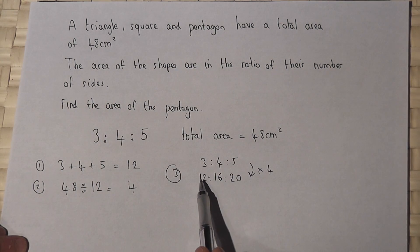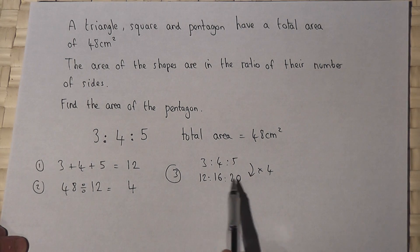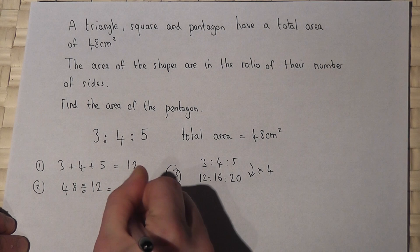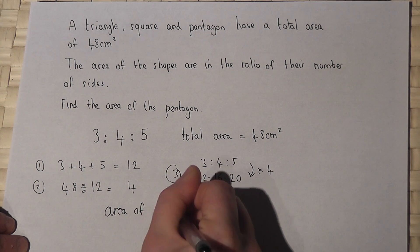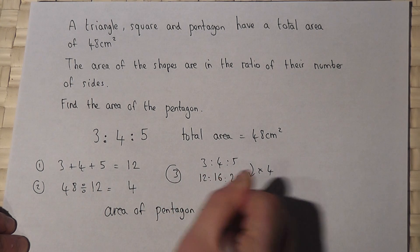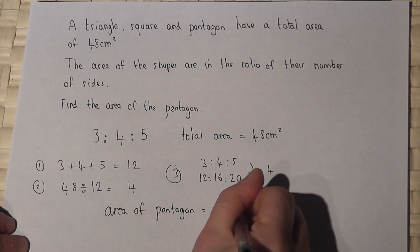To check that, 12 plus 16 is 28, plus 20 is 48. So the area of the pentagon must be 20 centimeters squared.